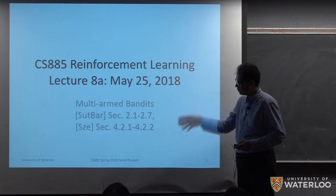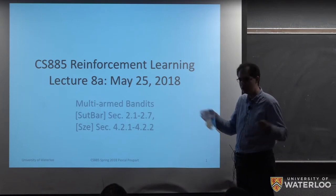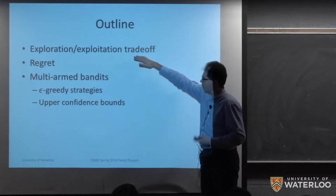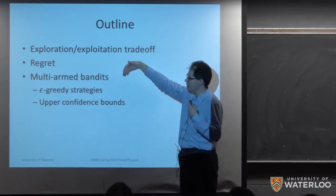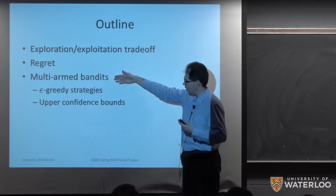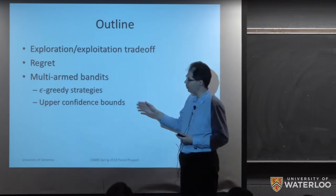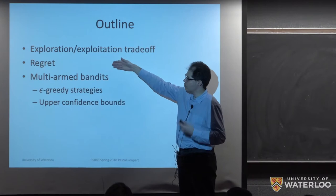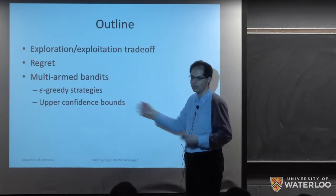This lecture is dedicated to that problem. It's easier to understand how to trade off exploration and exploitation when we simplify the problem to just a single state. We'll explain the problem in more detail, see a measure of regret to evaluate how good different algorithms are, and then go into specific algorithms. One exploration strategy we've already seen is the epsilon-greedy strategy — we'll review it and show more formally in terms of regret how well it performs.